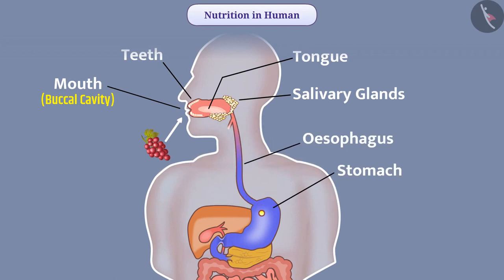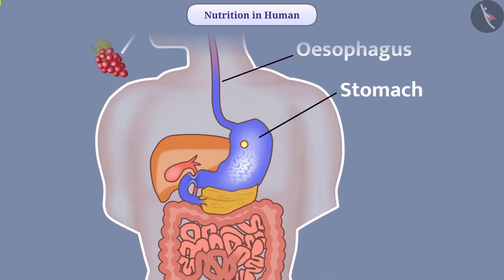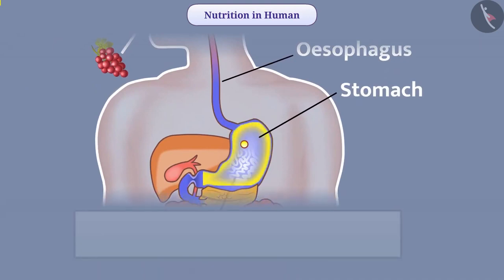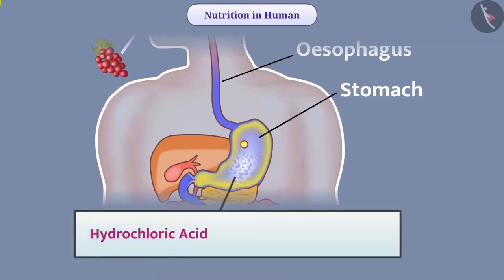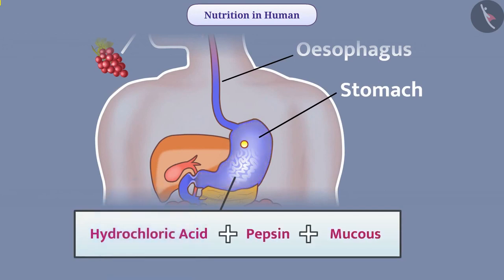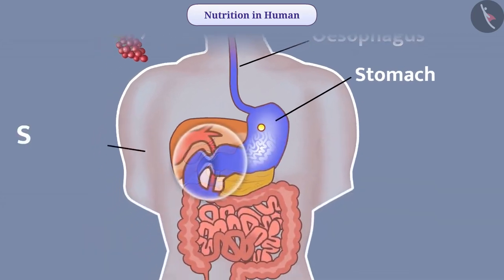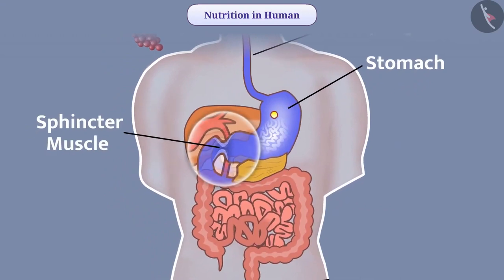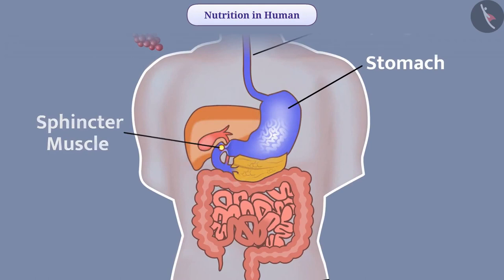When food enters the stomach, it expands. Gastric glands present in the wall of the stomach secrete hydrochloric acid, protein-digesting enzyme pepsin, and mucus. Hydrochloric acid creates an acidic medium and the enzyme pepsin works in the acidic medium. The mucus protects the inner lining of the stomach from acid. Sphincter muscle in the stomach regulates the release of acidic food, due to which the food from the stomach reaches the intestine.